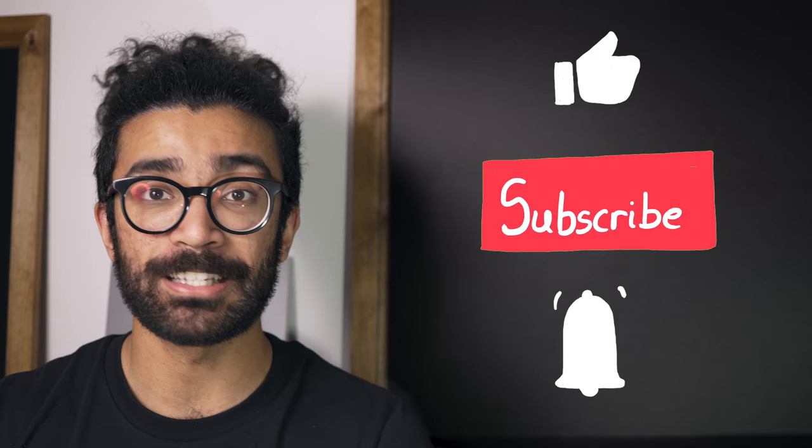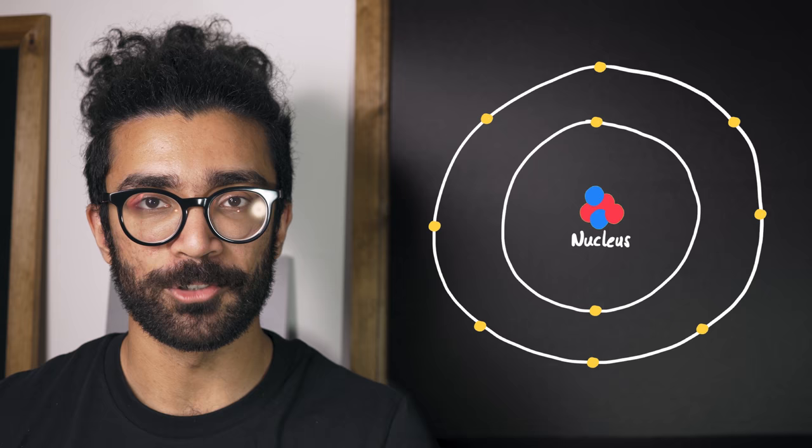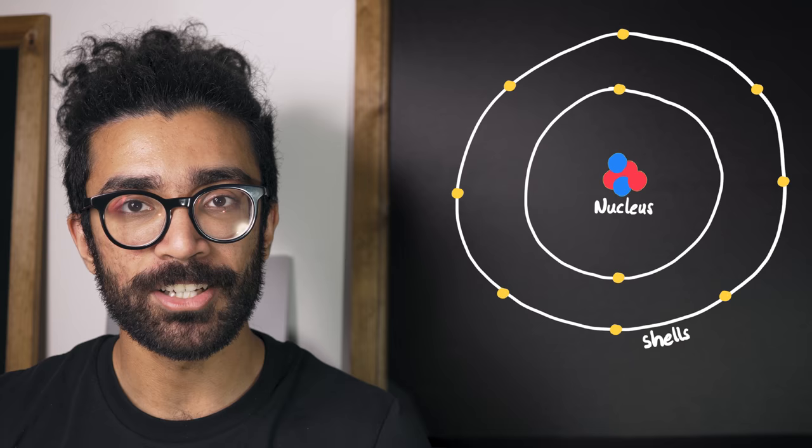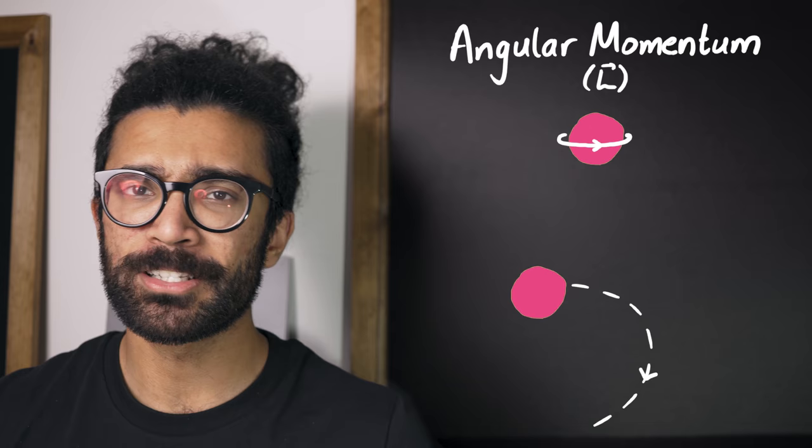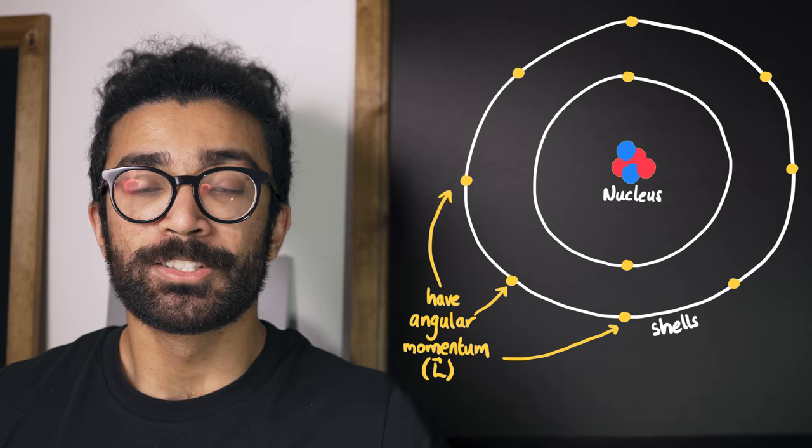We'll start by recapping a couple of important ideas. Firstly, at the centre of an atom, we'll find a region known as the nucleus. This nucleus contains protons and neutrons, while electrons are found in very specific energy levels surrounding the nucleus. Now, when electrons are found in these energy levels, we'll call them shells for now, and we'll see the difference in a moment, but when these electrons are in these shells, they have what's known as angular momentum.